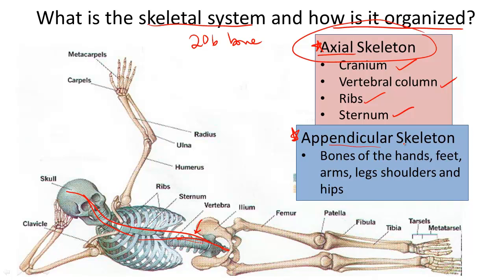Next, the appendicular skeleton includes basically everything not yet identified in the axial skeleton, including bones of the hands and feet, arms, legs, shoulders, and hips. You might want to pause the video to examine the medical terms for each of the bones in the body, and you may wish at minimum to know those listed on this diagram.